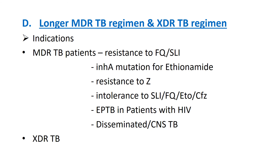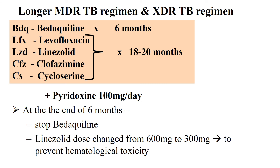For the longer MDR-TB regimen and XDR-TB regimen, patients included are MDR-TB with resistance to fluoroquinolones and second-line injectables, INH mutation for ethionamide, resistance to pyrazinamide, intolerance to second-line injectables, fluoroquinolones, ethionamide or clofazimine, extra-pulmonary TB in HIV patients, disseminated or CNS TB, and XDR-TB. Drugs used are bedaquiline, levofloxacin, linezolid, clofazimine, and cycloserine for 18–20 months with pyridoxine prophylaxis. At the end of six months, bedaquiline is stopped and linezolid dose is reduced from 600 mg to 300 mg to avoid hematological toxicity.